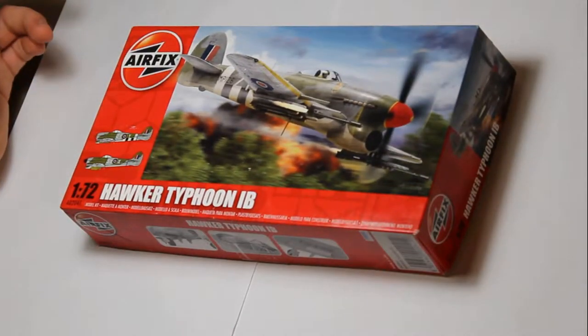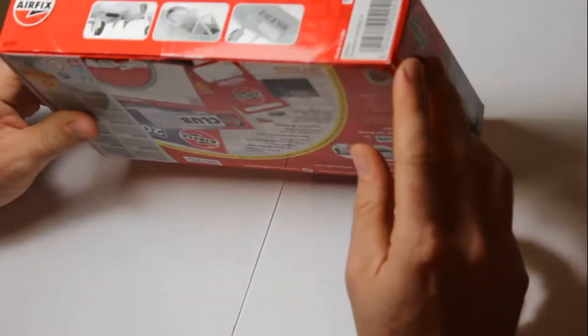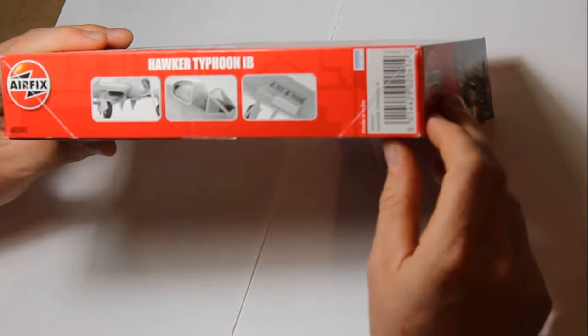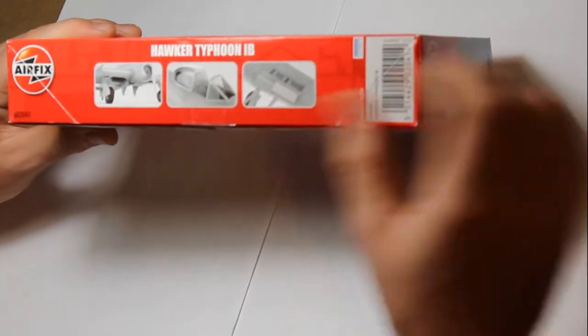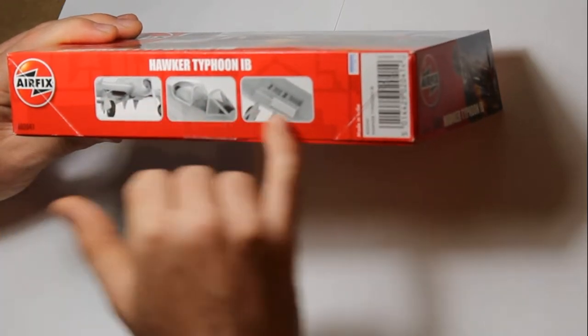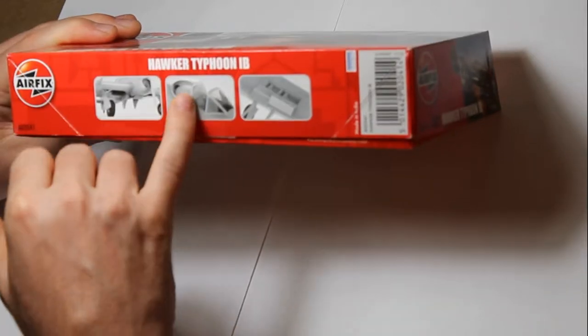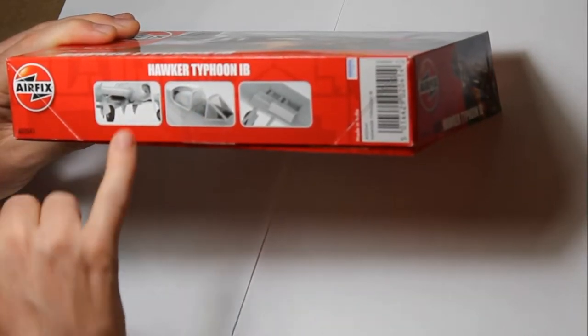Wonderful box art from Airfix, which is becoming the norm now. As you work your way around the box, we can see it's Cartograph decals, and there's quite a lot of detail, interior detail. You've got gun bays here in the wing, very nice canopy and cockpit detail, and good detail on the undercarriage.